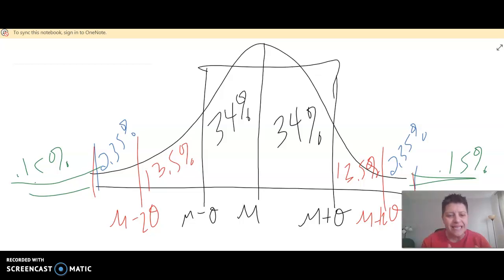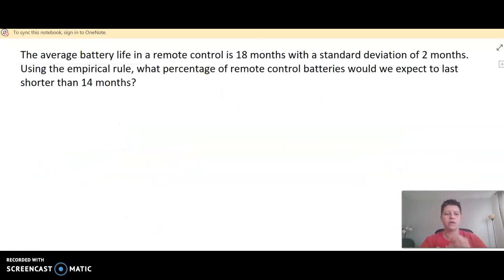And so the empirical rule is nice because these percents are consistent with every problem you use the empirical rule for. The problem is, what if you're not exactly on one of these lines? If you're somewhere in the middle, the empirical rule doesn't work. So it's only good at kind of an overall high-ranking example.